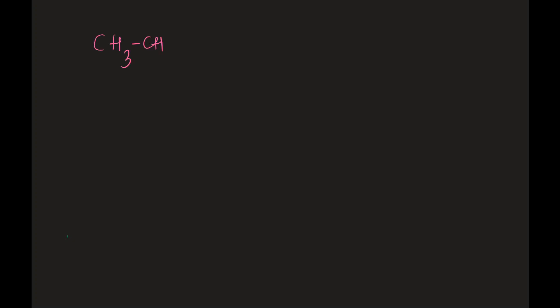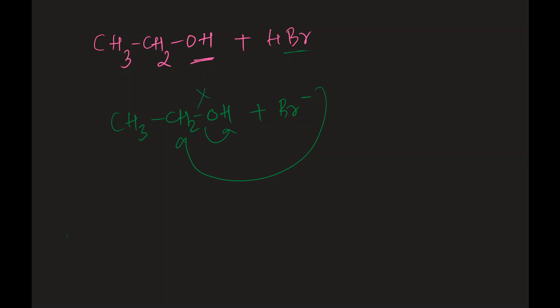In this video we will discuss replacement of a hydroxyl group by a halogen. Let's talk about ethanol. If you want to replace the hydroxyl group of this alcohol with bromine, how can we do that? Previously we talked about how you cannot simply do this: CH3CH2OH + Br⁻, because Br⁻ is not a good nucleophile and the hydroxyl group OH⁻ is not a good leaving group.